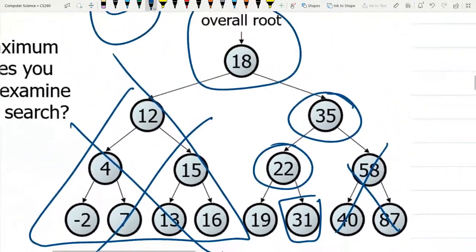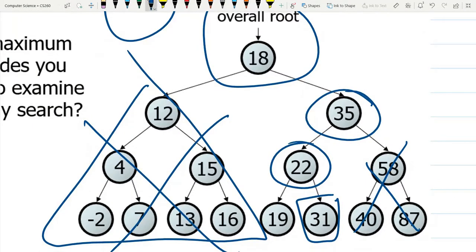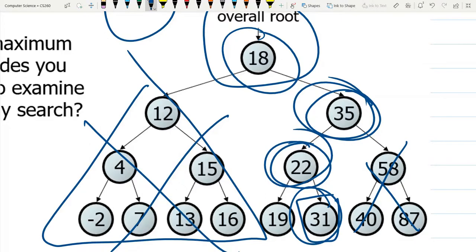And if you look, how many comparisons did I have to make? One, two, three, four comparisons. And how many elements were in my tree? A lot more than four. You can count them all up.